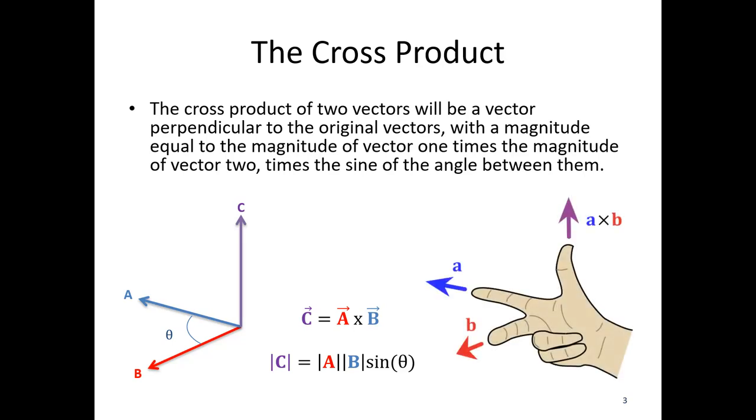Over here we've got an illustration of a hand. Make sure you're using your right hand for this. It's going to give you the opposite result if you use your left hand. You're going to take your index finger, point it straight out in the direction of your first vector. So in this case we've got a. You're going to bend your middle finger in the direction of b.